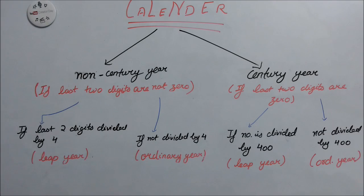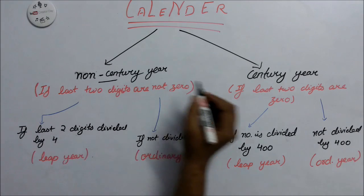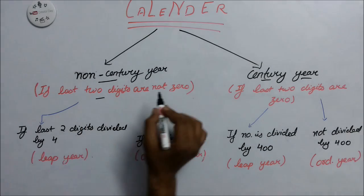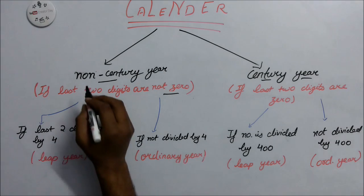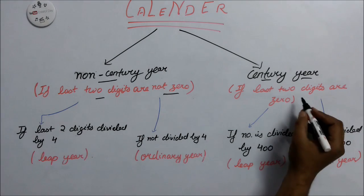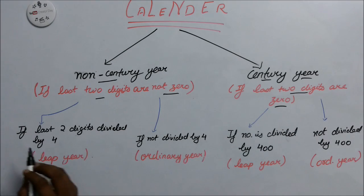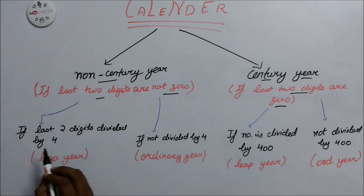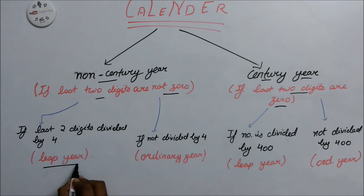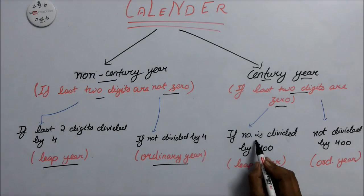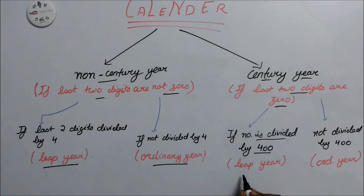First, we divide years into two categories: non-century year and century year. If the last two digits are non-zero, it is a non-century year. If the last two digits are 00, it is a century year. In a non-century year, if the last two digits are divisible by 4, it is a leap year; otherwise it is an ordinary year. In a century year, if the number is divisible by 400, it is a leap year.